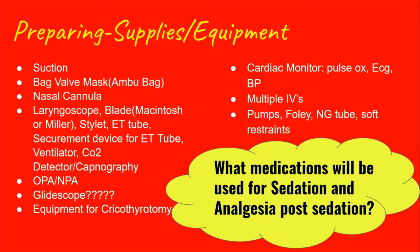Specifically for intubation — although the RT and the provider usually gather these supplies — you should know what they are. You're going to need a laryngoscope, the blades — the curved one is called the Macintosh and the straight one is called the Miller. You're also going to need a stylet, which is the blue stick that goes inside the ET tube to give it sturdiness while it's inserted. And you're going to need a CO2 detector to confirm placement — a small square device attached to the end of the ET tube after intubation that changes color from purple to yellow. Other possible equipment includes an OPA or a glidoscope, which is a video-assisted laryngoscope.